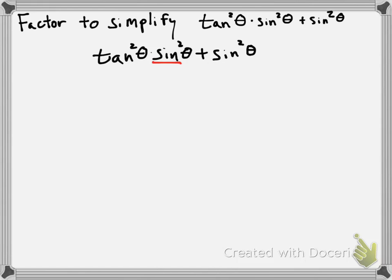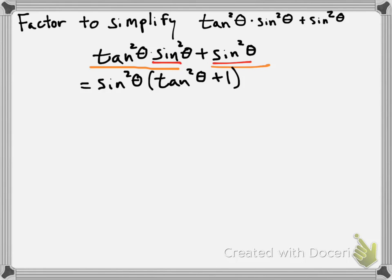Notice that we have sine squared of theta in both terms. Since sine squared of theta occurs in both terms, I can common factor it out. So if I'm common factoring out sine squared of theta, I'll have sine squared of theta out front and then some stuff in brackets — I'm dividing each term by sine squared of theta. Tangent squared of theta times sine squared of theta divided by sine squared of theta leaves tangent squared of theta. And sine squared of theta divided by sine squared of theta gives us just 1.